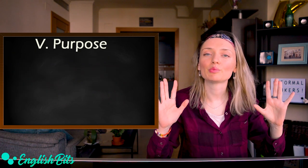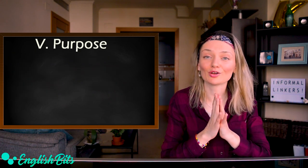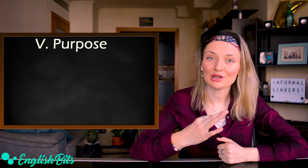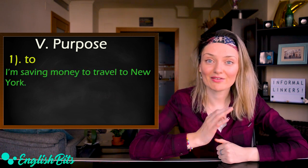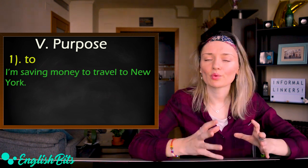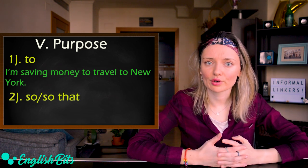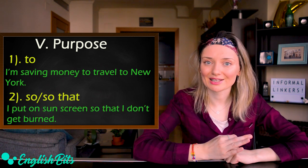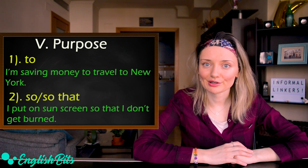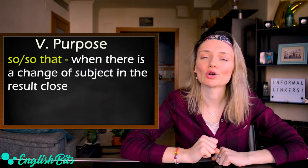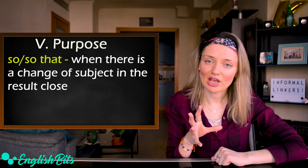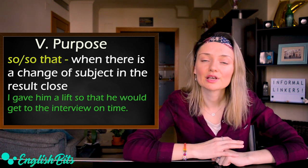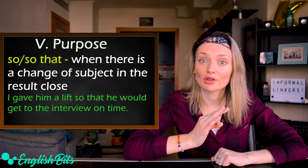Let's move on to number five: purpose. There are a lot of different ways to express purpose in English. One of them is by using 'to' — for example: I'm saving money to travel to New York. We can also use 'so' or 'so that'; 'so' is more informal — for example: I put on sunscreen so that I don't get burned. We must use 'so' or 'so that' when there is a change of subject in the result clause — for example: I gave him a lift so that he would get to the interview on time. The linkers 'so as to' and 'in order to' are more formal.